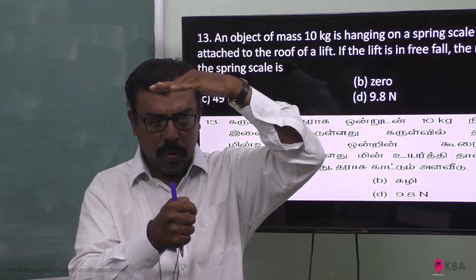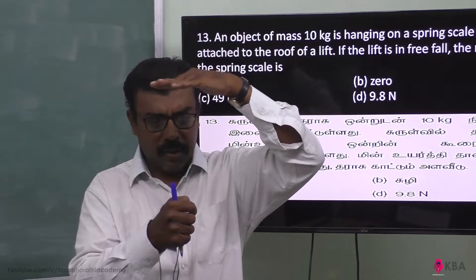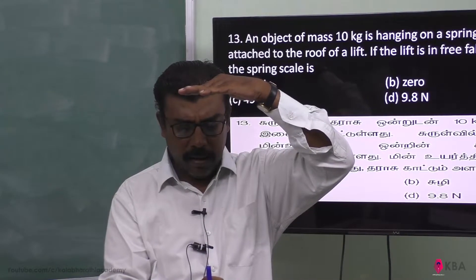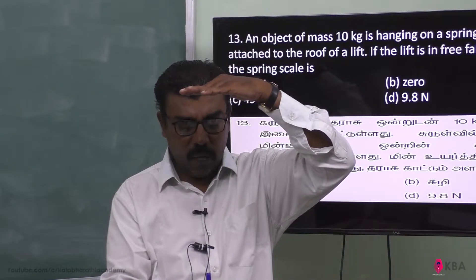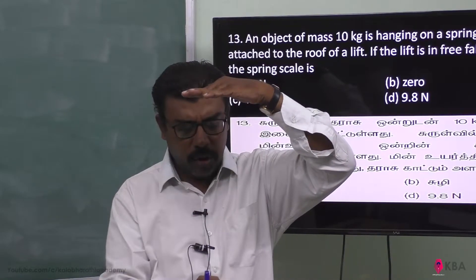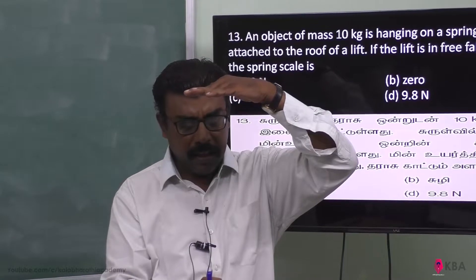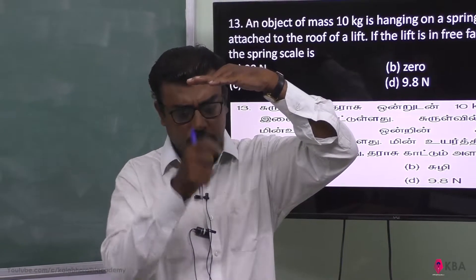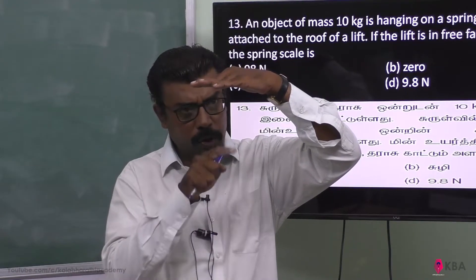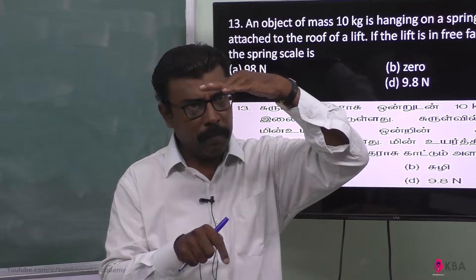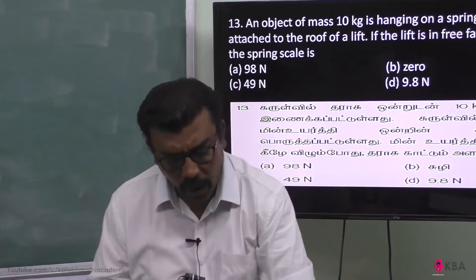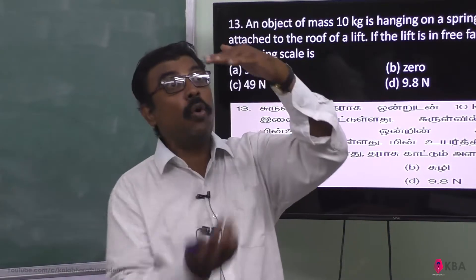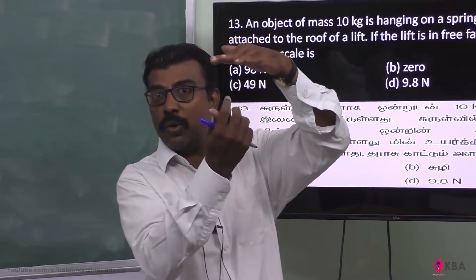In this fixed arrangement, gravitational force acts and the spring is elongated — it gives a reading. The spring tension equals Mg. But when the lift is falling freely, there is no normal force.